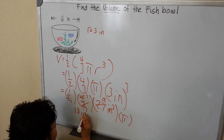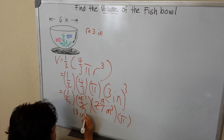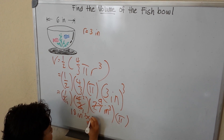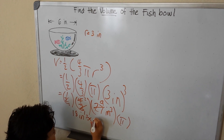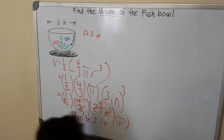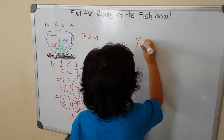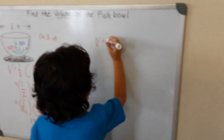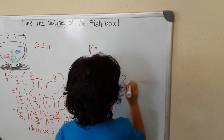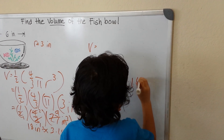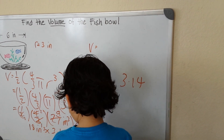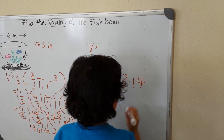So we have 18 inches cubed times pi, which is 3.14. So I'm going to put it right here. Volume is equal to 3.14 times 18.